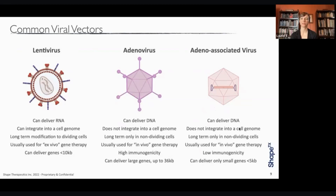For adeno-associated viruses, or AAVs, these also deliver DNA and do not integrate into the cellular genome, so they can only provide long-term correction in non-dividing cells. These are usually used for in vivo gene therapies, and they have lower immunogenicity than adenoviruses, but a very small carrying capacity of only up to 5,000 bases. I'd like to give some caveats: this is a general overview, and there can be exceptions. For instance, some scientists have made lentiviruses that don't integrate. When we say adenoviruses and AAVs don't integrate, we mean they don't have an active mechanism to do so, but patients who have received AAV during gene therapies have been shown to have small integration events at a very low level. And even though we say AAV has low immunogenicity, people who receive AAV vectors do still show immune responses.